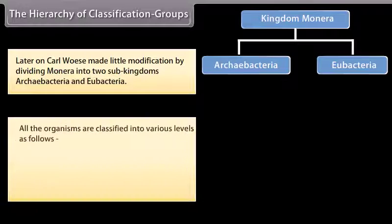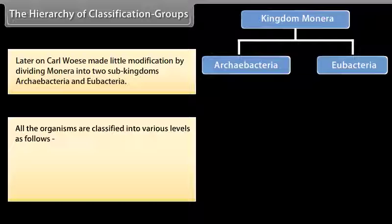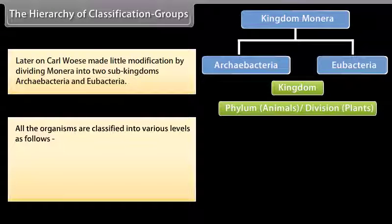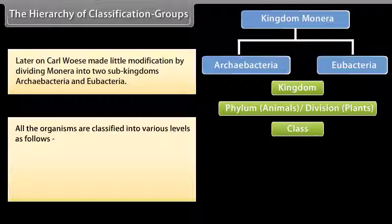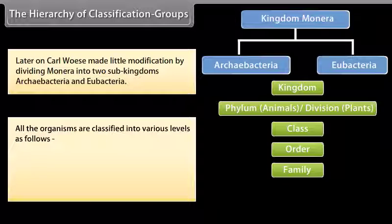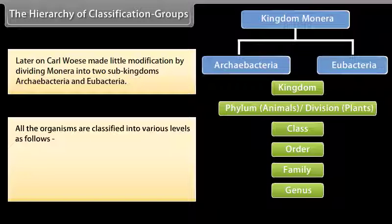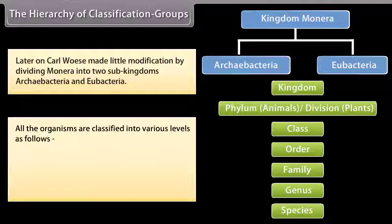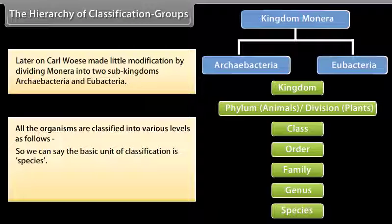All organisms are classified into various levels as follows: Kingdom, Phylum (for animals), Division (for plants), Class, Order, Family, Genus, and Species. The basic unit of classification is Species. We are now going to discuss the important characters of the five kingdoms.